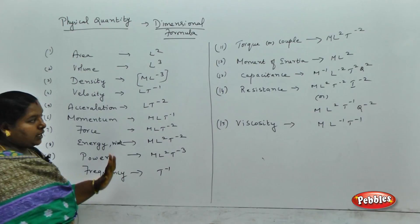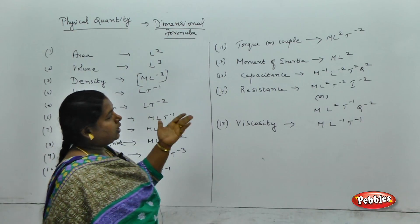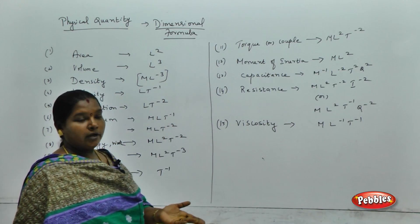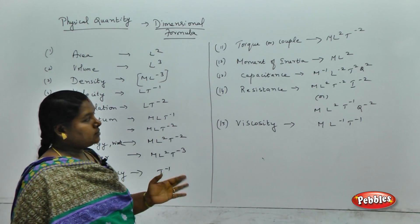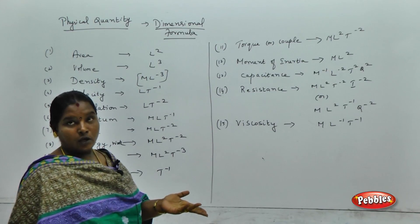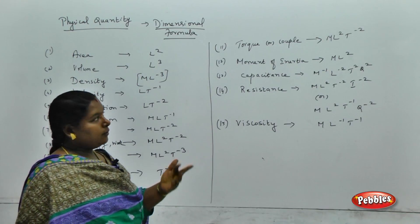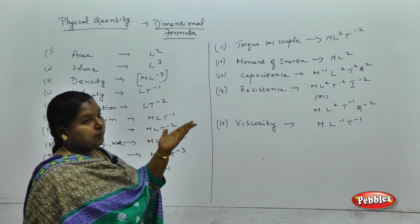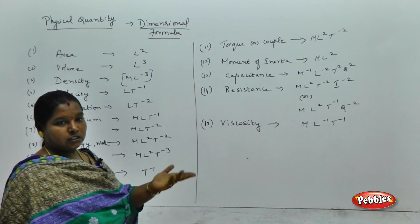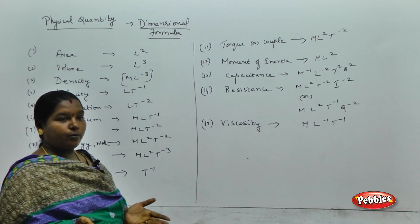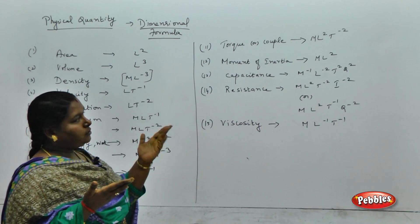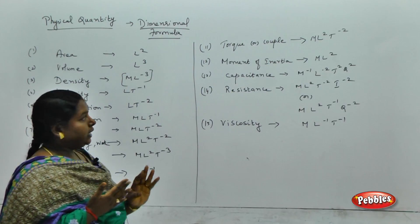Similarly, torque and moment of inertia. Moment of inertia I is equivalent to MR squared — M has dimension M and R squared has the dimension of length squared. So moment of inertia is M into L squared.